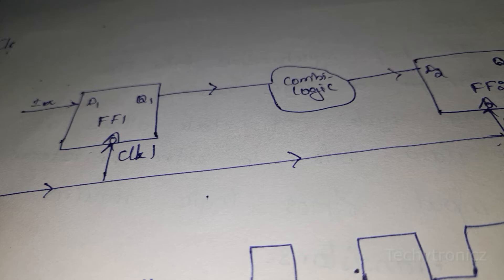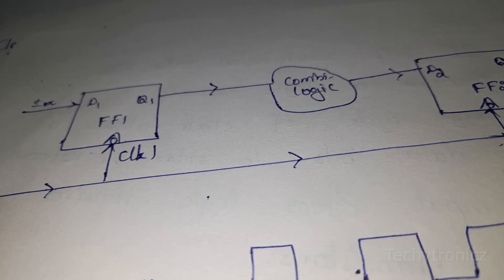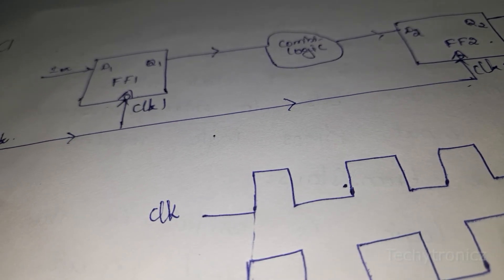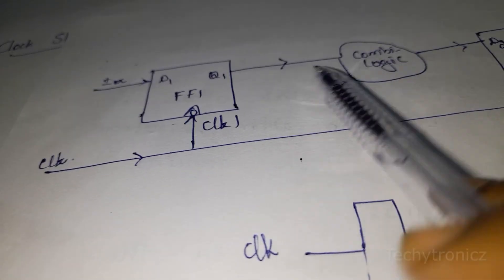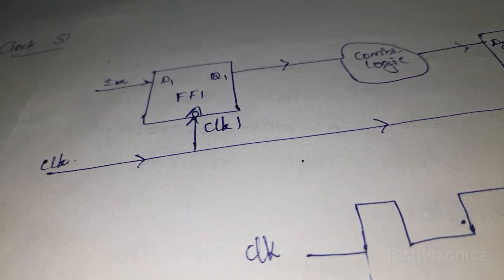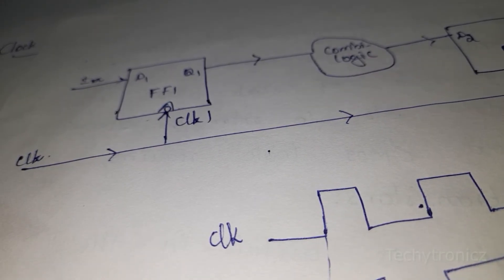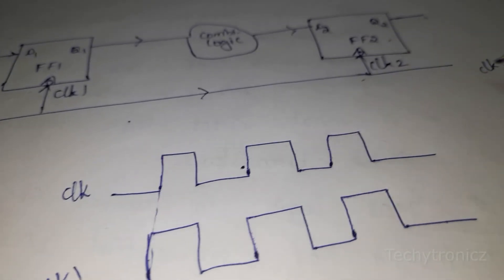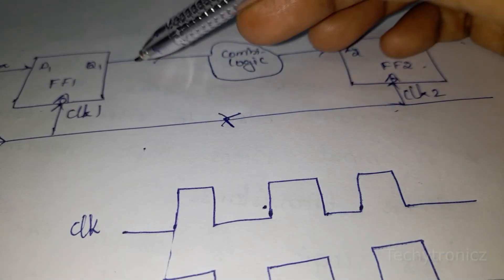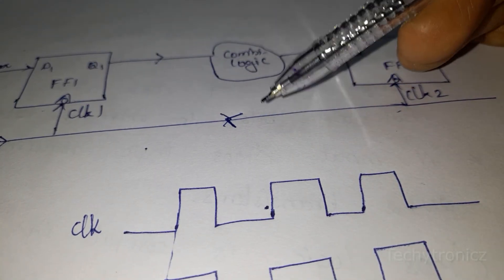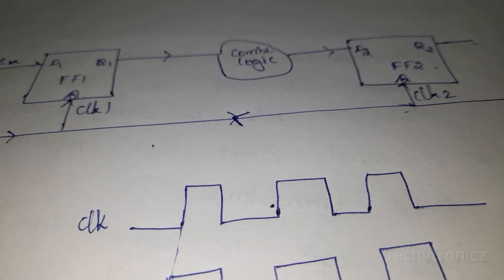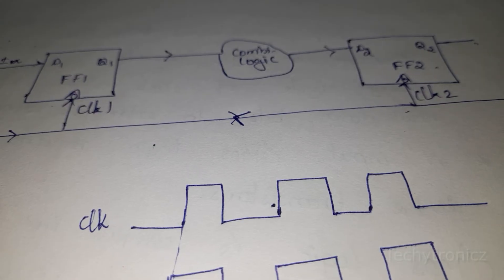For positive clock skew, clock flow is left to right — the same direction as data flow. For negative clock skew, the data flow and the clock flow are in opposite directions.